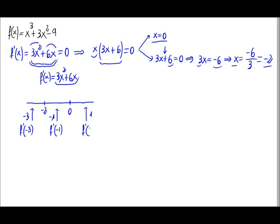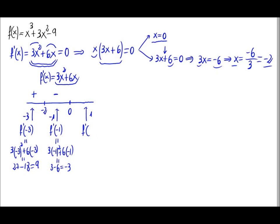Now we substitute these values into the derivative. Substituting -3: 3(-3)² + 6(-3) = 27 - 18 = 9, which is positive. Substituting -1: 3(-1)² + 6(-1) = 3 - 6 = -3, which is negative. Substituting 1: 3(1)² + 6(1) = 3 + 6 = 9, which is positive.